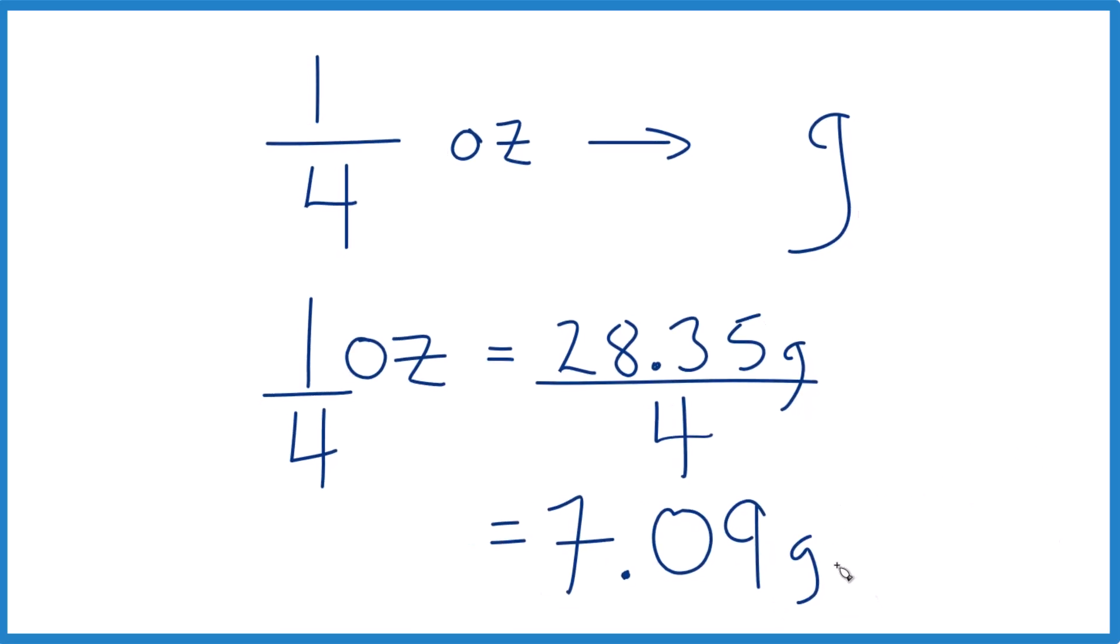And a decent electronic balance can weigh that many grams out accurately. So in answer to the question, one-fourth ounce equals 7.09 grams.